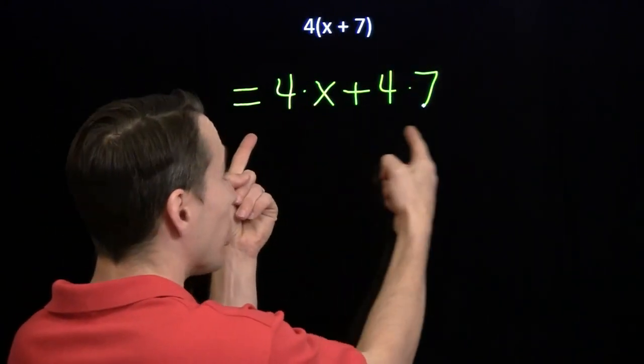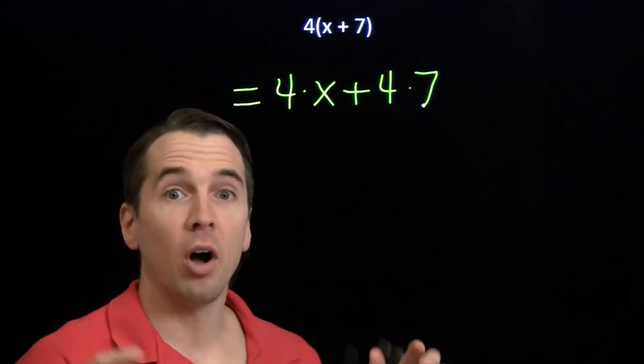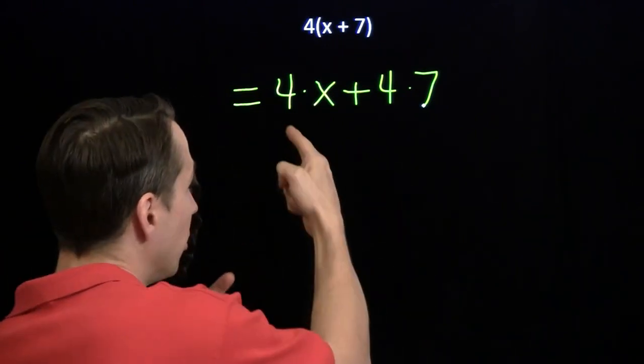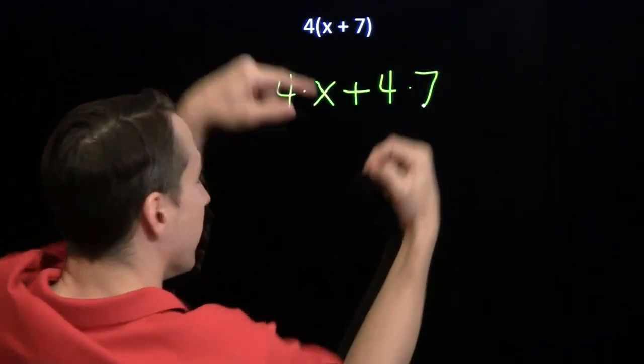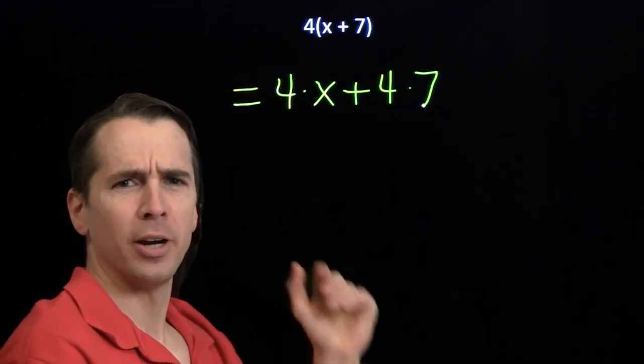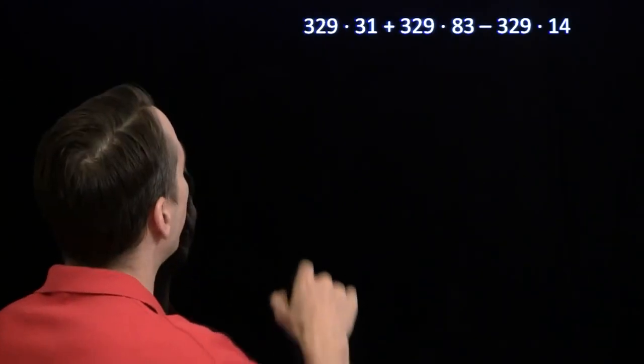We're going to start with expressions that look like this, and then we're going to do what we call factoring out the 4. We see the 4 in each of these products, that means we can write it like that. That seems kind of vague right now. Let's take a look at a problem in which this factoring can be so helpful.